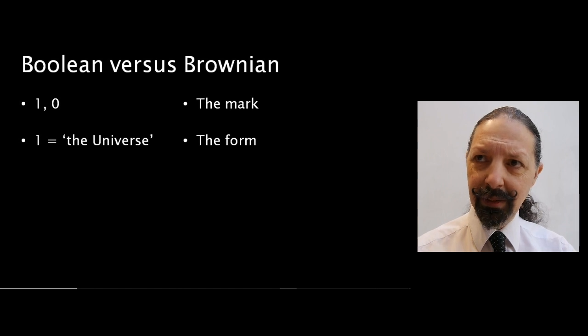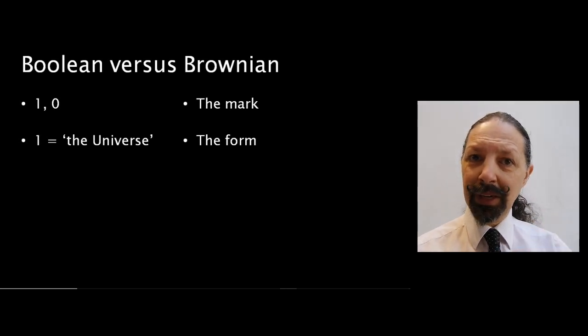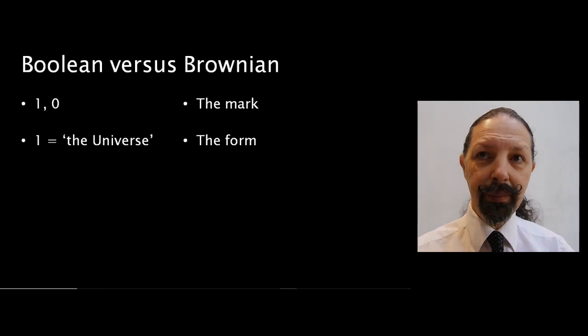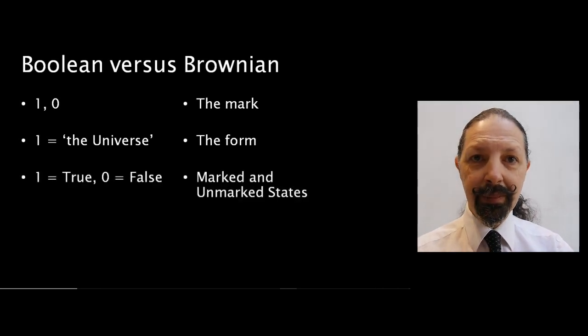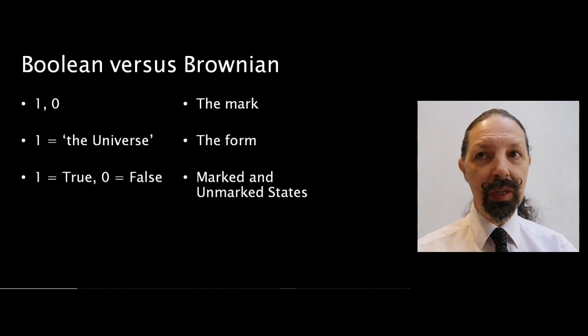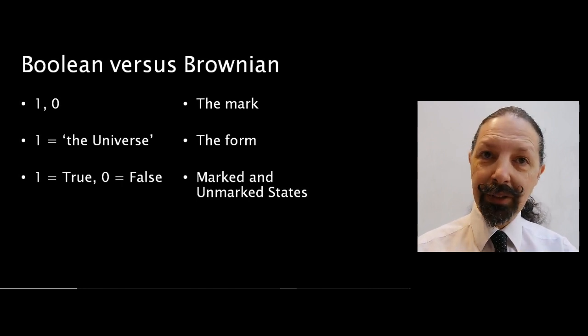In the Brownian system, it's all part of the form. In the Boolean system, one equals true, zero equals false. In the Brownian system you have marked and unmarked states.